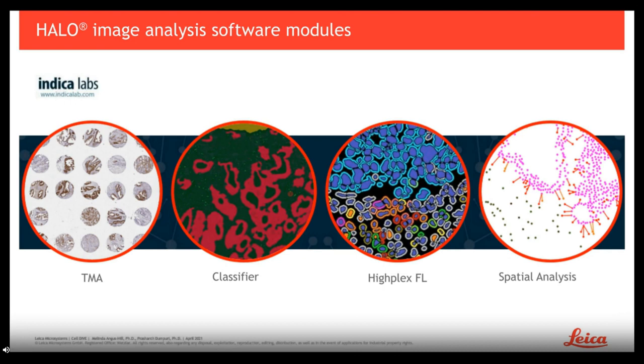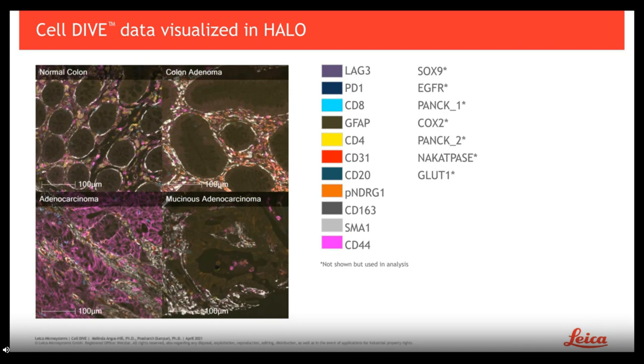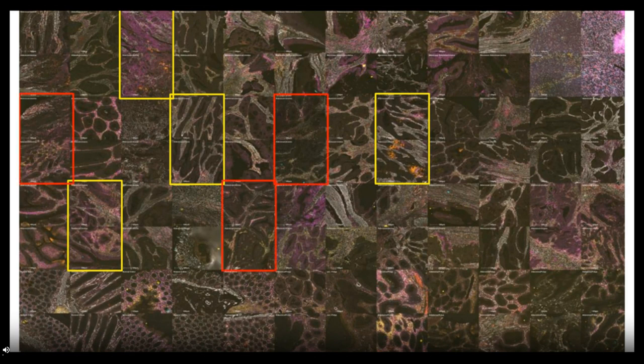HALO is used as an image viewer but is also powerful for image analysis. For classification, segmentation, and spatial analysis, several HALO modules were used, including the HALO TMA, classifier, HyPlex FL, and spatial analysis modules. Here, zooming in on specific cores in the TMA, HALO displays cell staining across multiple markers in colon adenoma, adenocarcinoma, mucinous adenocarcinoma, and normal colon. Here is a zoom of each tumor core within the TMA compiled in an 8 by 12 format. Tumor cores from the same patient are easily identified across pathologies — highlighted in yellow are adenocarcinoma cores from the same patient that are qualitatively similar based on biomarker expression, while boxed in red are adenocarcinoma cores that are qualitatively distinct within the same patient, possibly due to intratumoral heterogeneity.